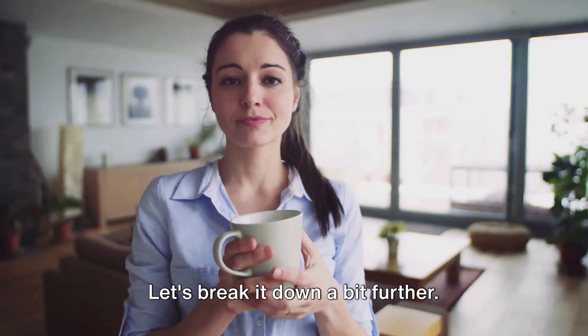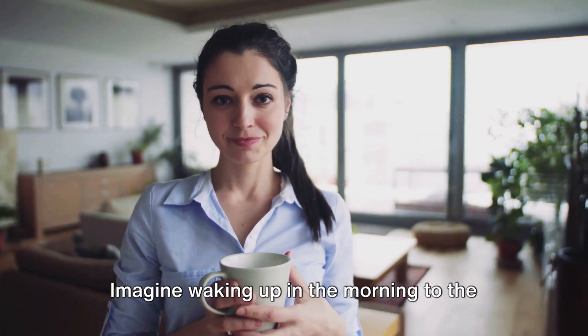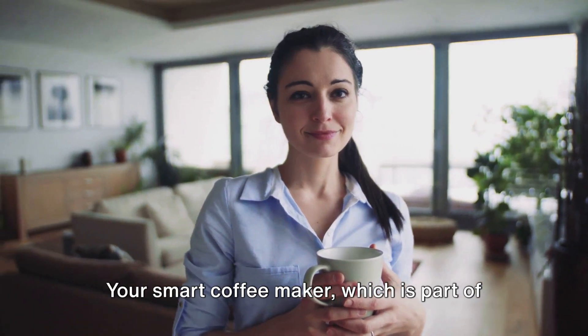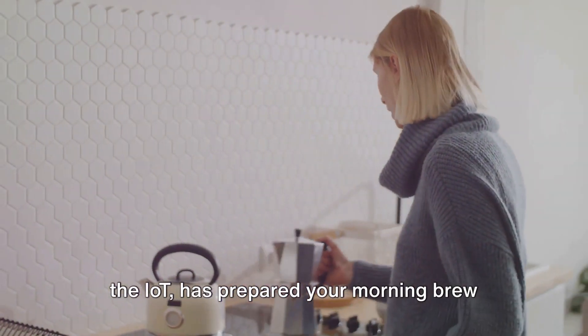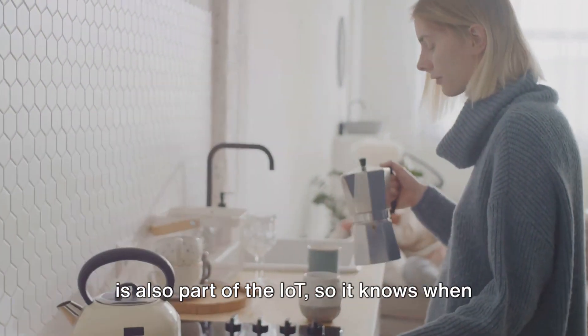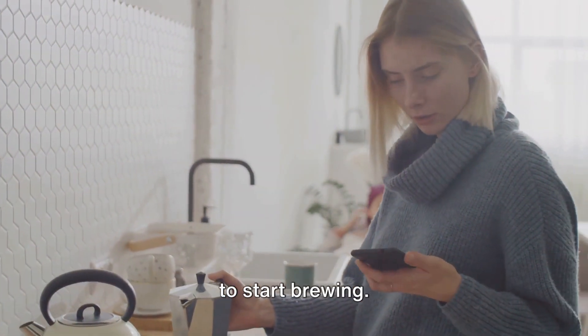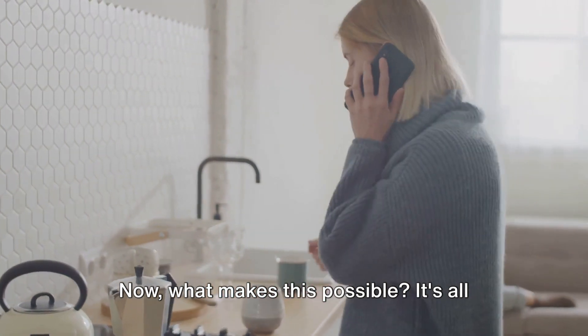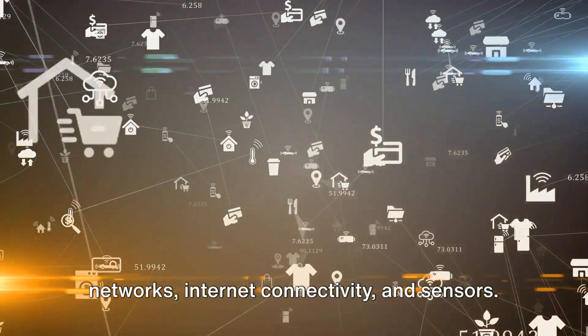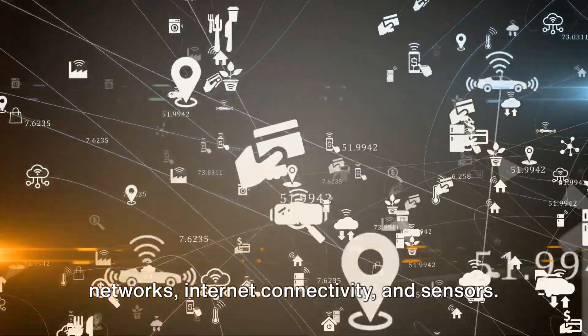Let's break it down a bit further. Imagine waking up in the morning to the smell of coffee brewing. Your smart coffee maker, which is part of the IoT, has prepared your morning brew just in time for you to wake up. It's connected to your alarm clock, which is also part of the IoT, so it knows when to start brewing. Now, what makes this possible? It's all thanks to a combination of wireless networks, internet connectivity, and sensors.